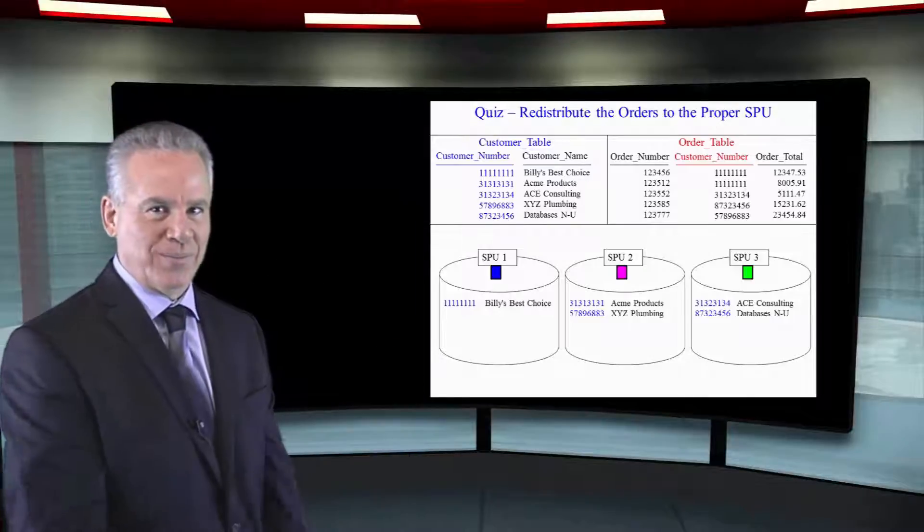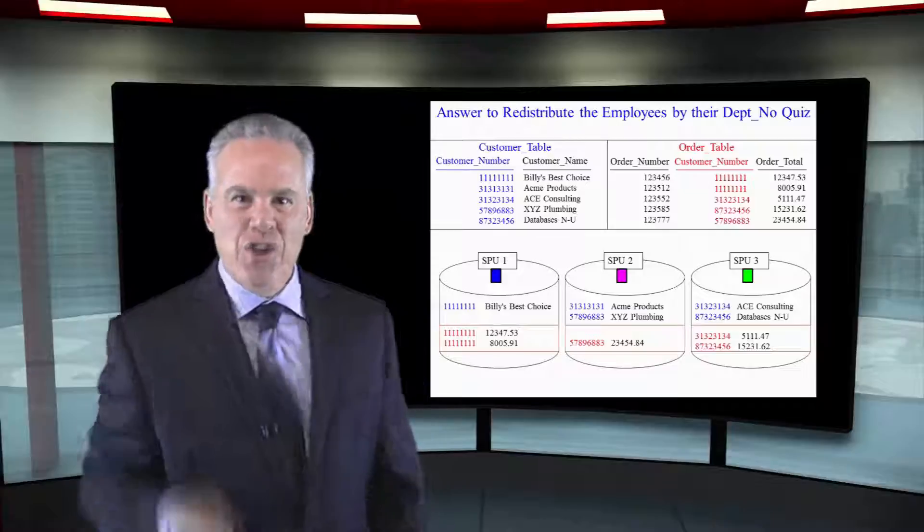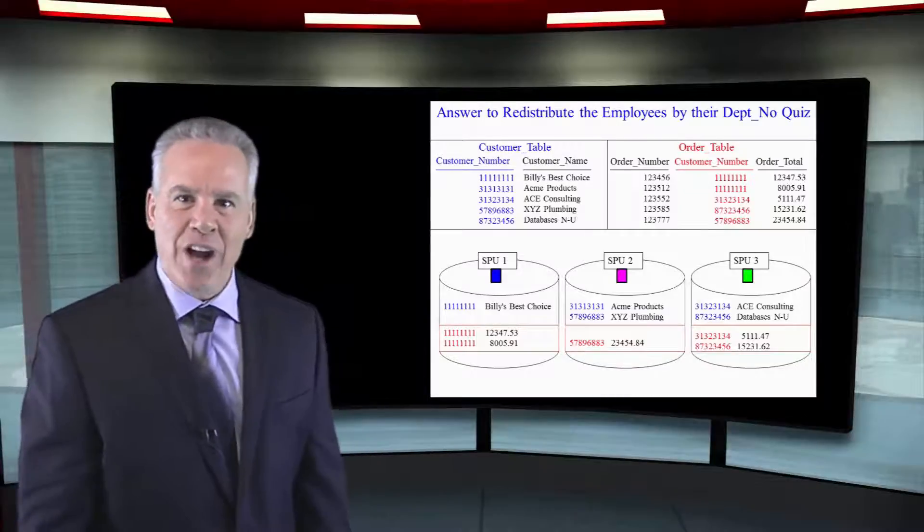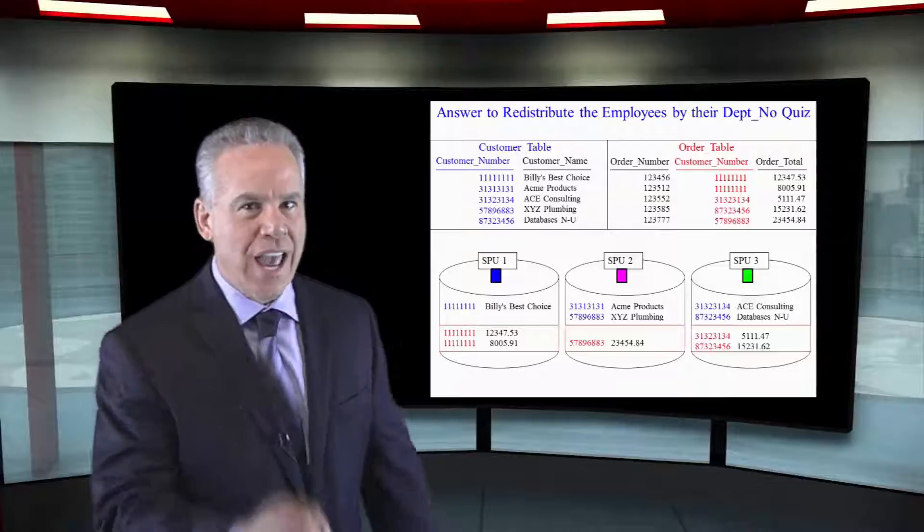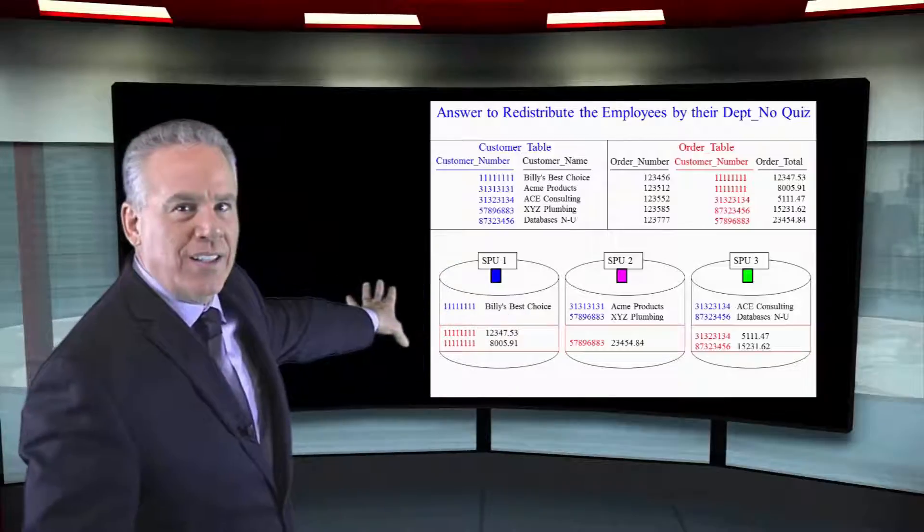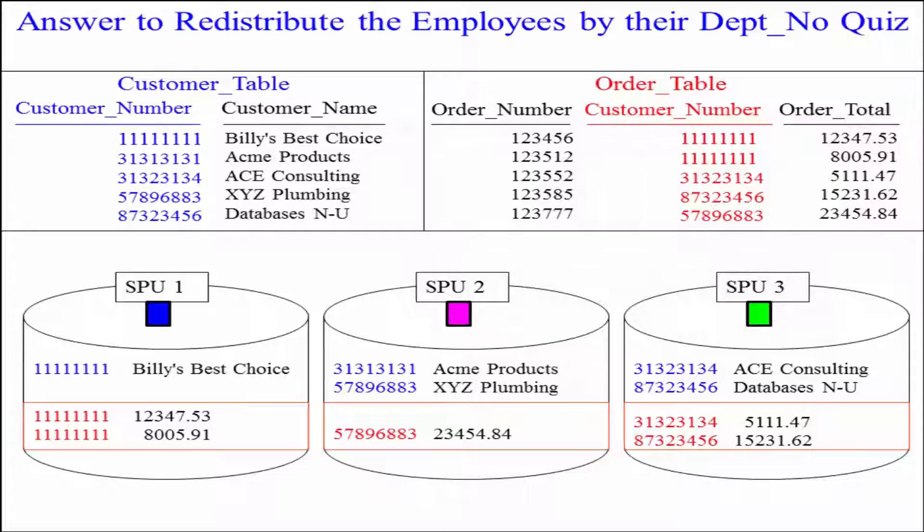Hash. Yeah, you nailed it. Great job. Don't underestimate how important this is. As you can see, when Netezza redistributed the order table, not by order number, but by customer number, everything magically lined up in the same memory.